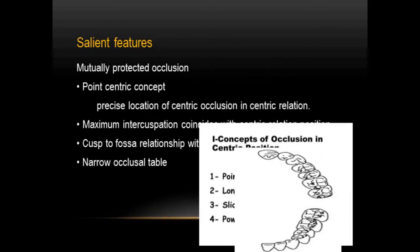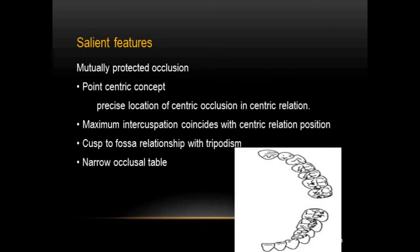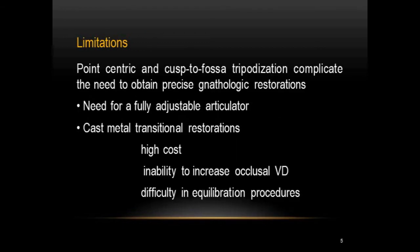Coming back to the nathological concept features: there was maximum intercuspation coinciding with the centric relation position, and there was a cusp to fossa relationship with tripodism, along with a narrow occlusal table. The limitation of the nathological concept was that it was based on point-centric and cusp to fossa tripodization, making it really difficult to achieve precision in restorations. It required a fully adjustable articulator, the provisional restorations were made of cast metal — which were costly — and it was difficult to increase the occlusal vertical dimension and to equilibrate.